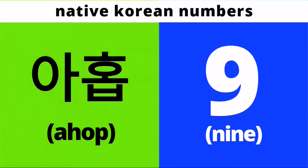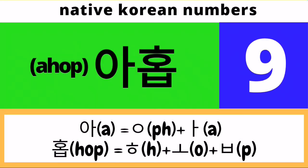Next, the native Korean version of number nine is Ahop. This is pronounced as a two-syllable word — the first syllable is A, the second syllable is Hop. Pronounce it with me: Ahop. To spell Ahop in Hangul, for the first syllable A we need to draw a placeholder Ieung followed by an A character. For the second syllable Hop, we need to draw a Hieut character followed by an O character followed by a Bieup character.